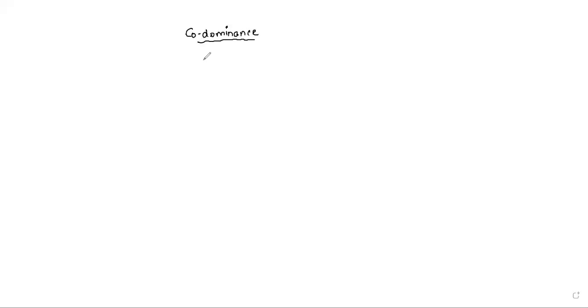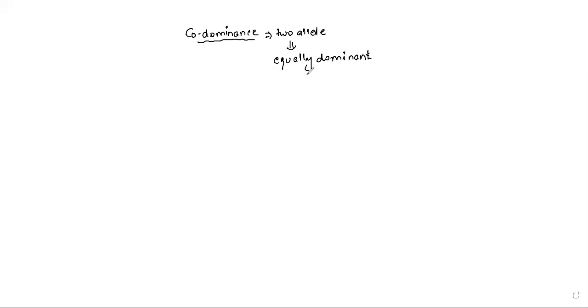This is one exception to the law of dominance. The second exception is co-dominance. Co- means both — we are talking about two alleles. If I place two alleles together and say both are equally dominant, here both alleles are equally dominant, both their expressions are coming. The simple example of co-dominance is our ABO blood group system.